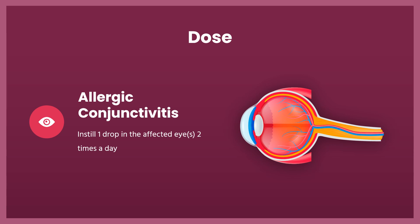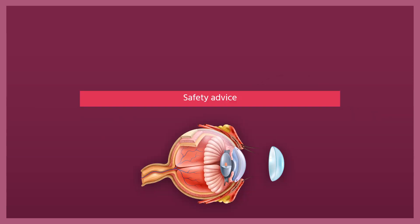Usual adult dose for allergic conjunctivitis: instill 1 drop in the affected eyes 2 times a day. Eye drops may be administered every 8–12 hours but should not be administered more than twice a day.